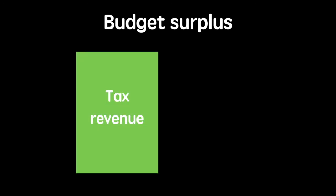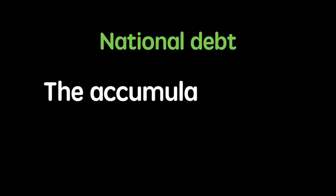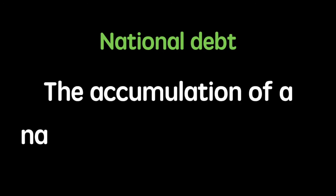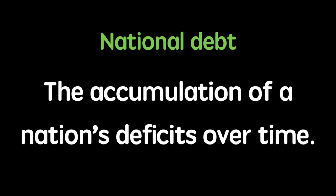A budget surplus occurs within a year when government spending is less than the amount of money collected as tax revenue. The national debt is the accumulation of a nation's deficits over time. It can be reduced when a government runs a budget surplus and increases every time the government runs a budget deficit.